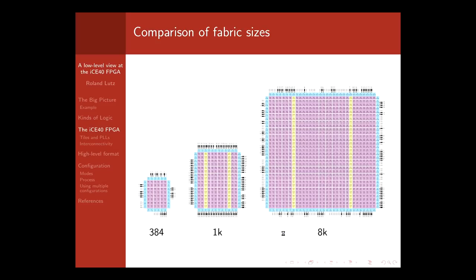Now let's look at the FPGAs. Here are the three FPGAs supported by IceStorm: the 384, which is the smallest in the series, then the 1K and the 8K FPGA. This talk will be mostly about the 1K, but it mostly applies also to the 8K, which is larger, has more tiles, and has two PLLs instead of one.